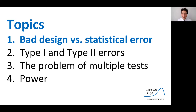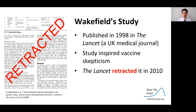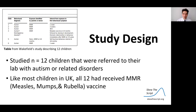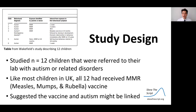First, we're going to talk about bad study design versus statistical error. Wakefield's study was published in 1998 and inspired a wave of vaccine skepticism, but the Lancet retracted the study in 2010. Why was it retracted? It's because of how it was designed. It studied only 12 children referred to the lab with autism or related disorders. Like most children in the UK, all 12 had received the MMR — the measles, mumps, rubella vaccine — and it suggested the vaccine and autism might be linked because they found autism or related disorders in all 12 children.